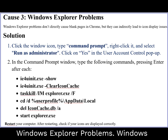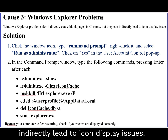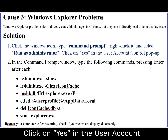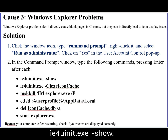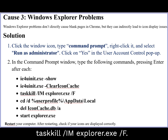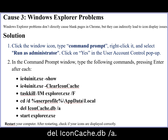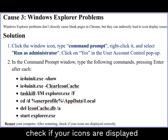Cause 3: Windows Explorer problems. Windows Explorer problems don't directly cause blank pages in Chrome, but they can indirectly lead to icon display issues. Solution: Click the Windows icon, type Command Prompt, right-click it, and select Run as Administrator. Click Yes in the User Account Control pop-up. In the Command Prompt window, type the following commands, pressing Enter after each: IE4Unit.exe show; IE4Unit.exe clear icon cache; taskkill /im explorer.exe /f; cd /d %userprofile%\appdata\local; del iconcache.db /a; then start explorer.exe. Restart your computer and check if your icons are displayed correctly.